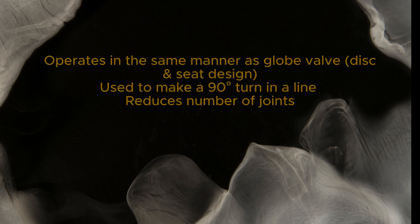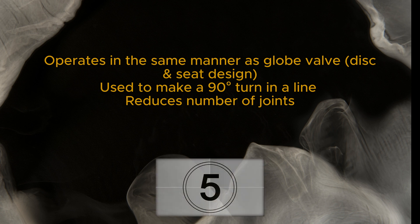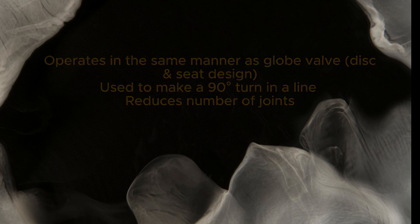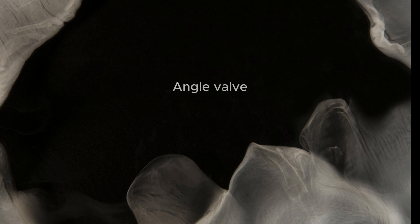The angle valve operates in the same manner as a globe valve, with a disc and seat design. It is used to make a 90-degree turn in a line and reduces the number of joints.